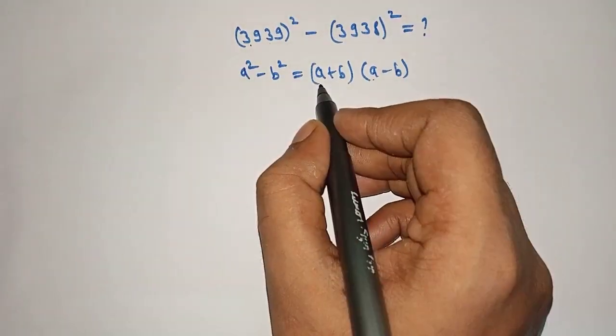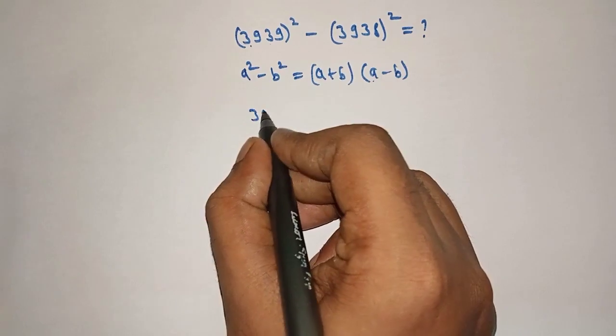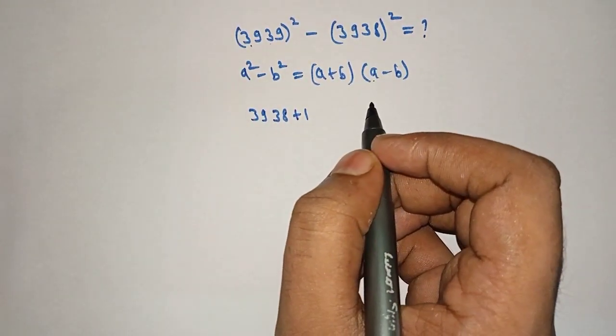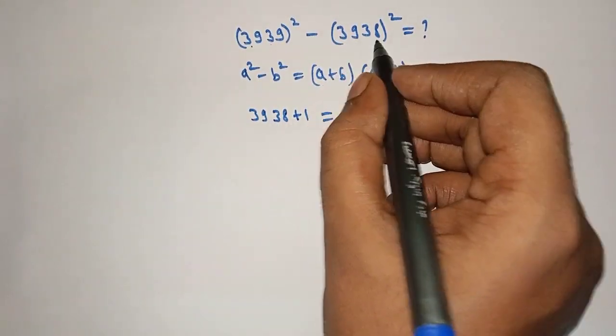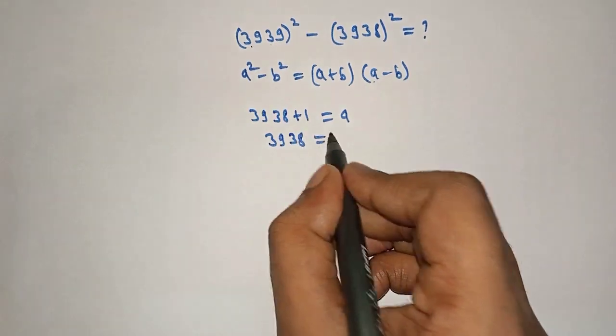So what is a here? We can write 3939 as 3938 plus 1. Let's take this as a and 3938 is b.